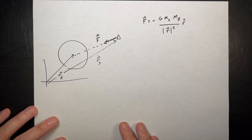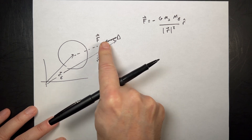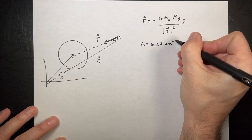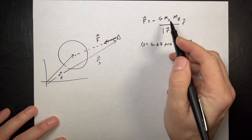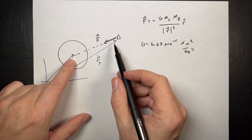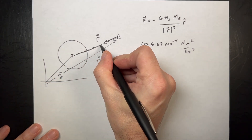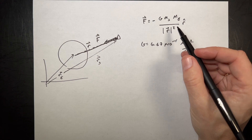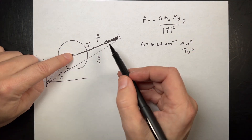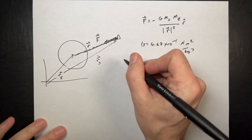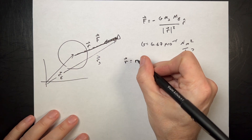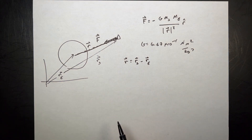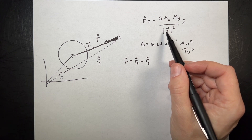Three-dimensional gravity. We can calculate this gravitational vector force as negative G — G is a constant, 6.67 times 10 to the negative 11th newton meters squared per kilogram squared — times the mass of the spacecraft times the mass of the Earth, divided by the magnitude of vector R squared. We need to find vector R, which goes from the Earth to the spacecraft, and then multiply by R hat.